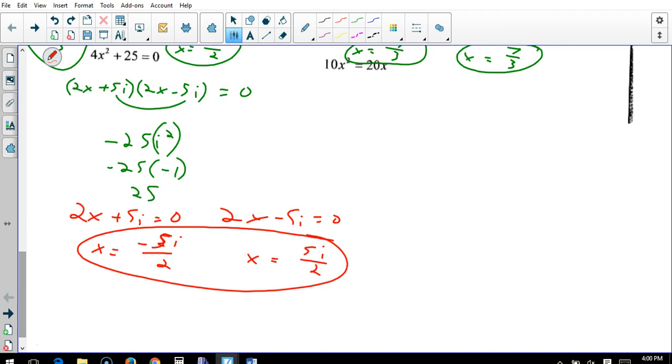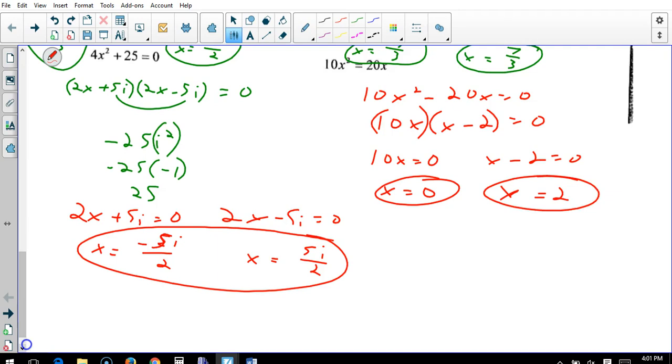And then this one right here, 10x squared equals 20x. In this case, we're going to move the 20x over, negative 20x. Now we're going to factor out the GCF. What can we factor out of both? We'll factor out 10x times x minus 2 equals 0. Now even though they're not both in parentheses, put it in parentheses. Hopefully it will remind you that you set this equal to zero. And in this case, 10x is going to end up being zero, and it is one of our answers. And then add 2 to both sides. And there are your answers.